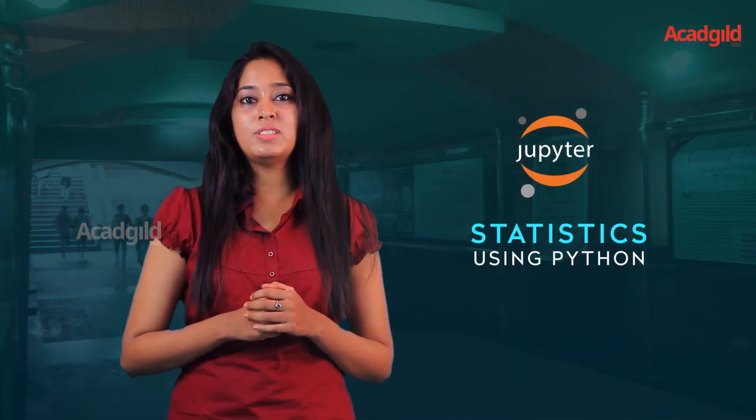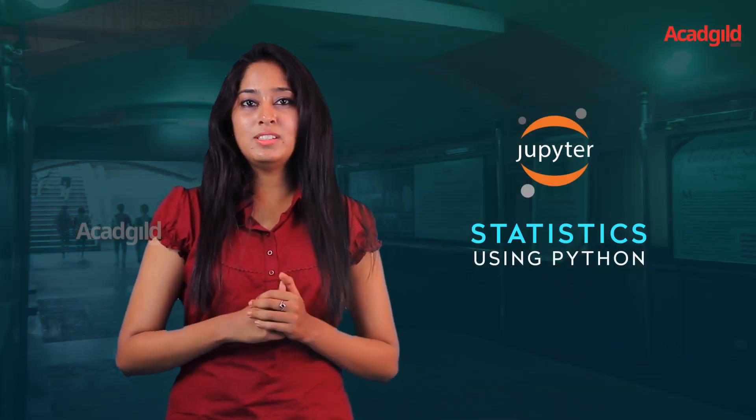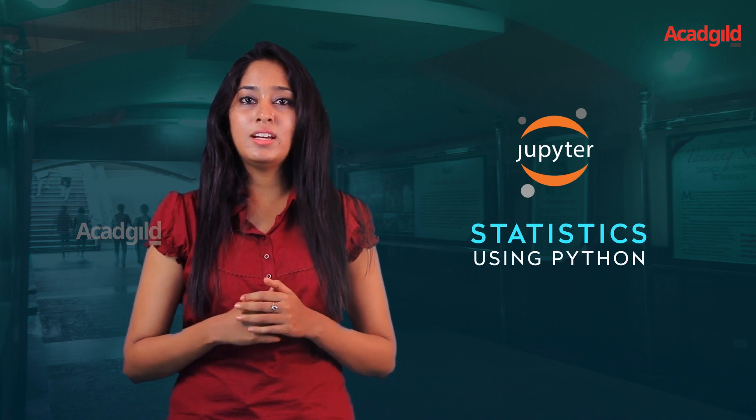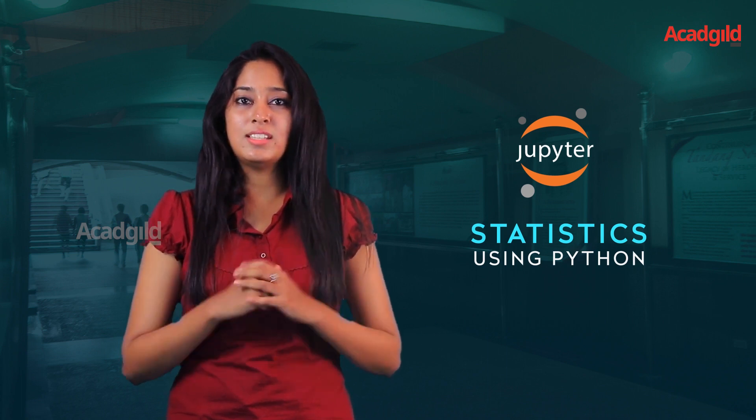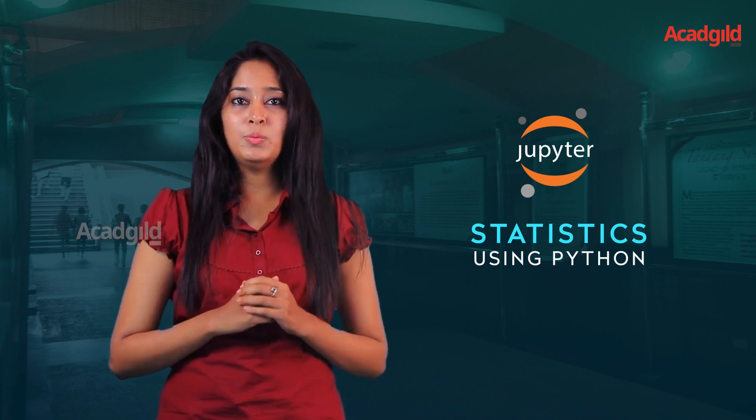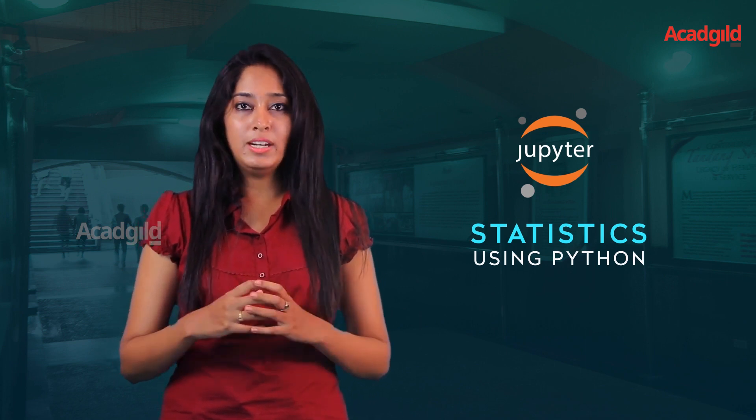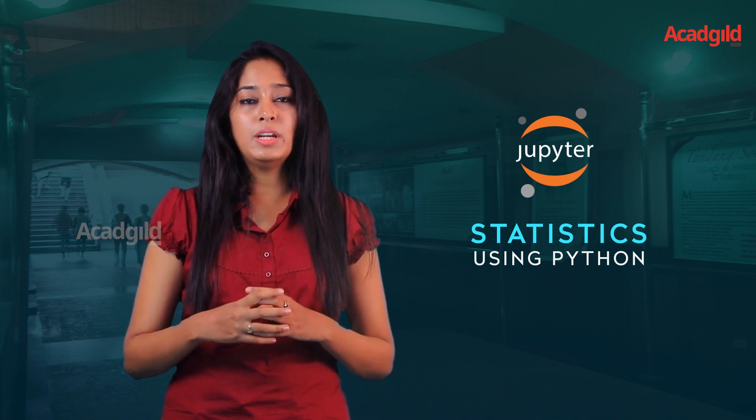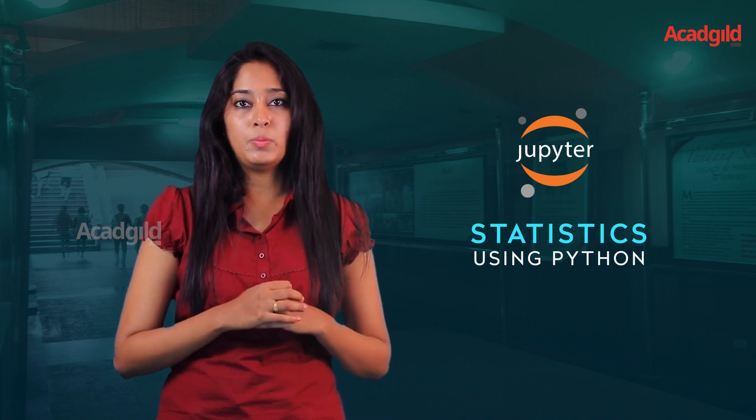Hi, welcome to another session of Statistics with Python. In the previous session, we learned about how the data is spread around the central, which is called central tendency, and how it varies with sample and population. In this session, we will be learning about measure of spread, and with this measure of spread, we will see how sample and population varies as well.